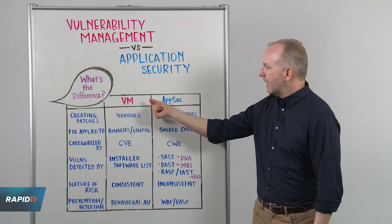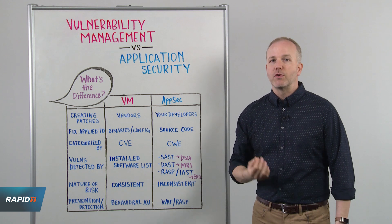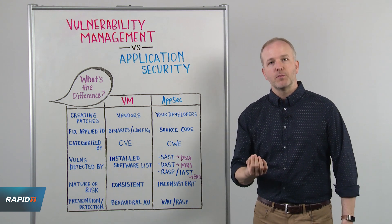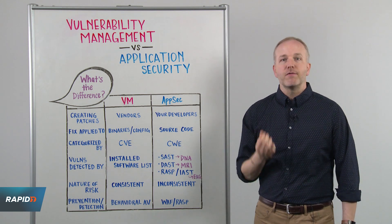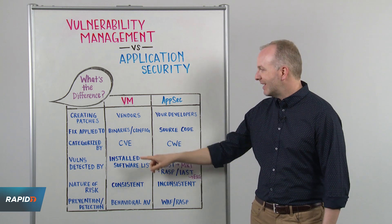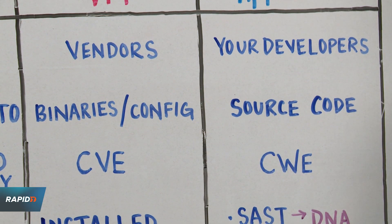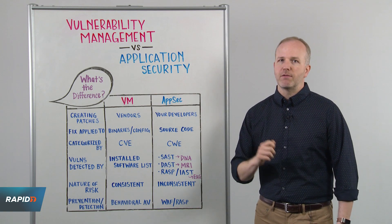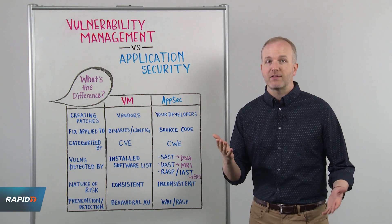In vuln management, it is the vendor's responsibility to write patches for vulnerabilities in your IT infrastructure. Once you have those patches, your IT team pushes them out. These specific vulnerabilities are discovered by third-party researchers and are uniquely identified by CVE, or Common Vulnerabilities and Exposures. CVEs are a specific instance of a vulnerability, such as a remote code execution in Adobe Acrobat 7.2.